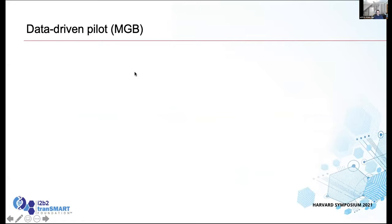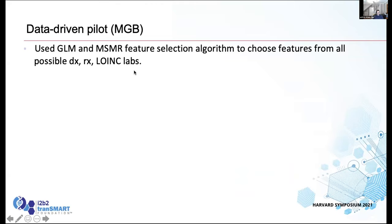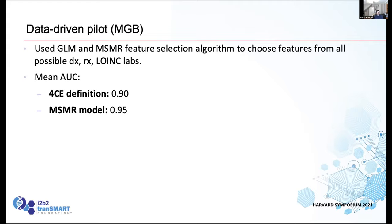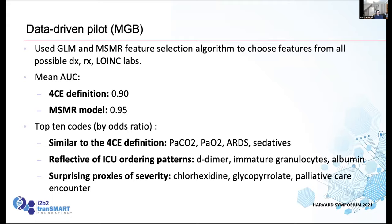On the data-driven pilot — do you need clinical expertise at all? We used a generalized linear model and a newer algorithm, MSMR, to choose features from all the diagnosis, medication, and lab codes, and tried to figure out the best set of proxies for severity. If you just look at the data, the AUC of the 4CE definition defined by experts was 0.9, and the machine-learned model had an AUC of 0.95. By that measure, you might think we should use the machine-learned model. But if you look at the top 10 codes learned by that model, some make sense and agree with what we came up with — PaCO2, PaO2, ARDS, sedatives — but as you go down, you get into some weirder things, like D-dimer.